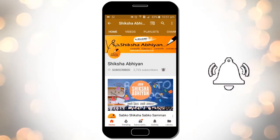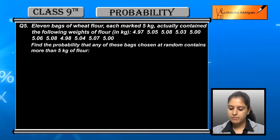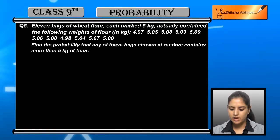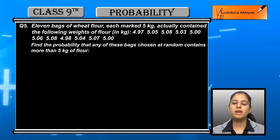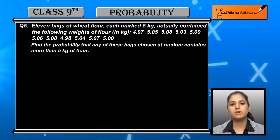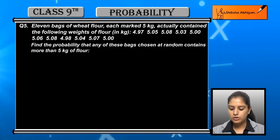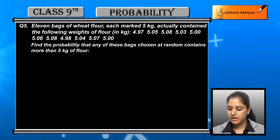The question states that 11 bags of wheat flour, each marked 5 kg, actually contain the following weights of flour in kg. So 11 bags were marked as containing 5 kg of wheat flour, but actually they had different weights of flour.